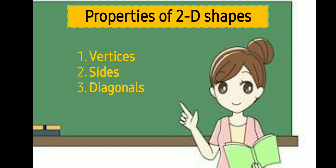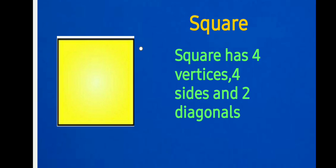Now coming to the properties of 2D shapes. The three properties are vertices, sides and diagonals. Coming to the square — a square has 4 vertices, 4 sides and 2 diagonals. A vertex is a point where at least 2 sides of a figure meet. A diagonal is a line segment that passes through the 2 opposite vertices.